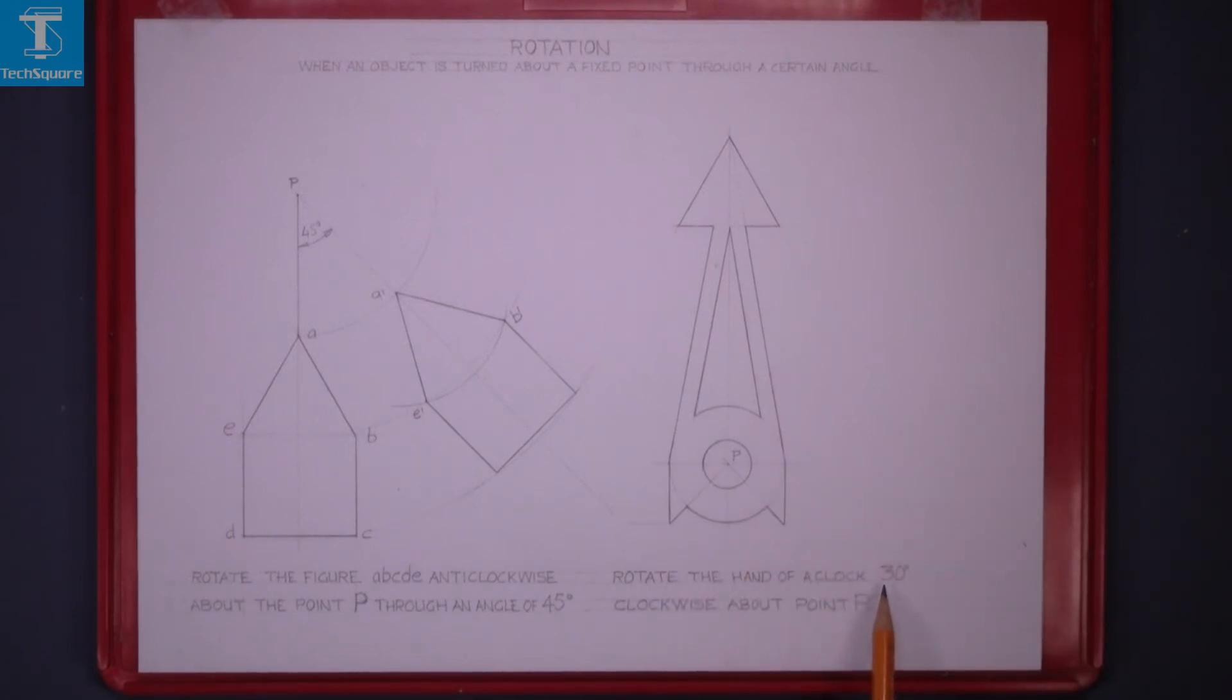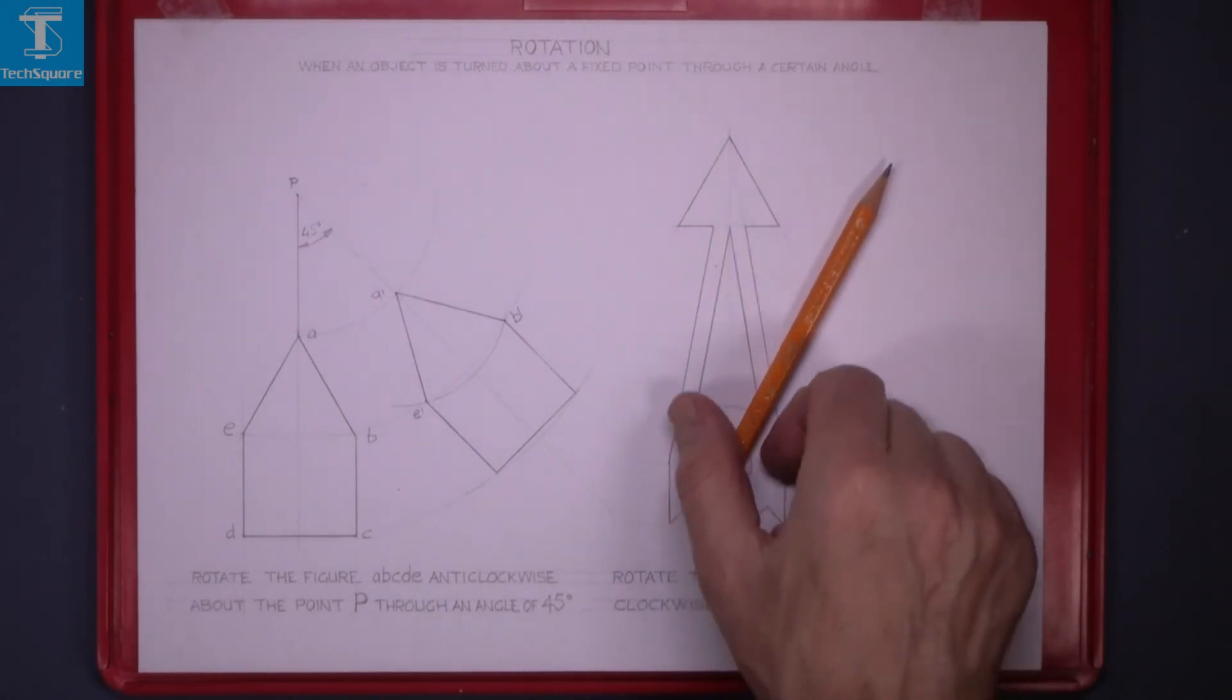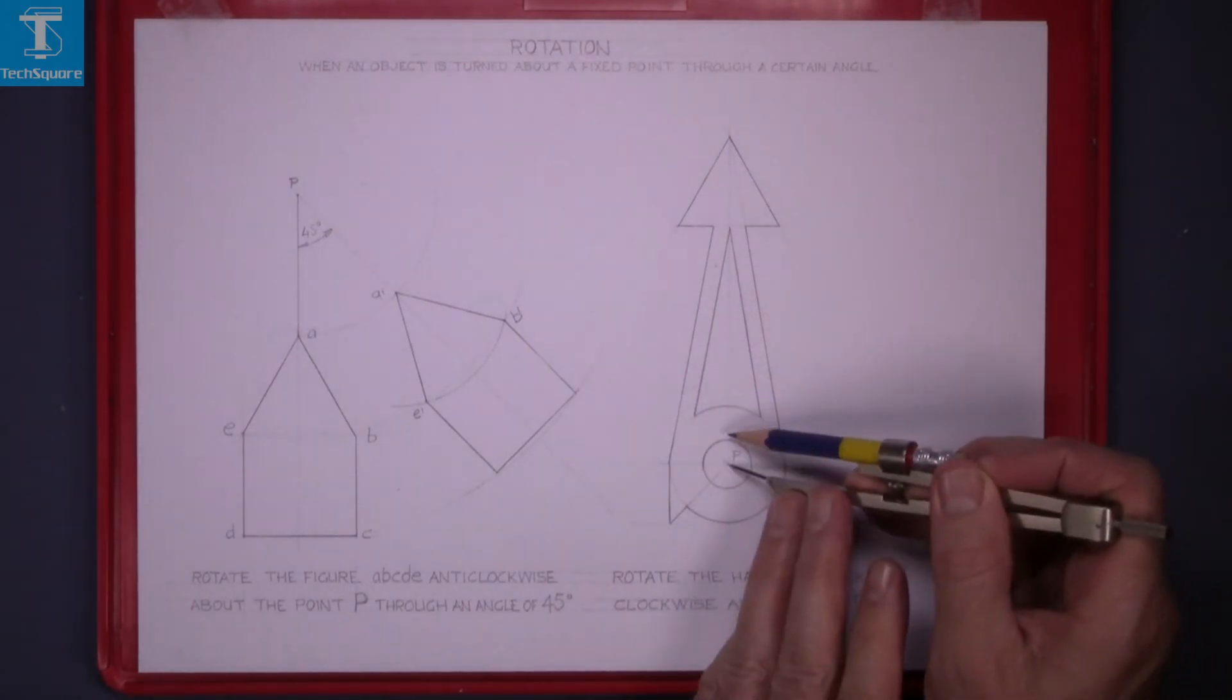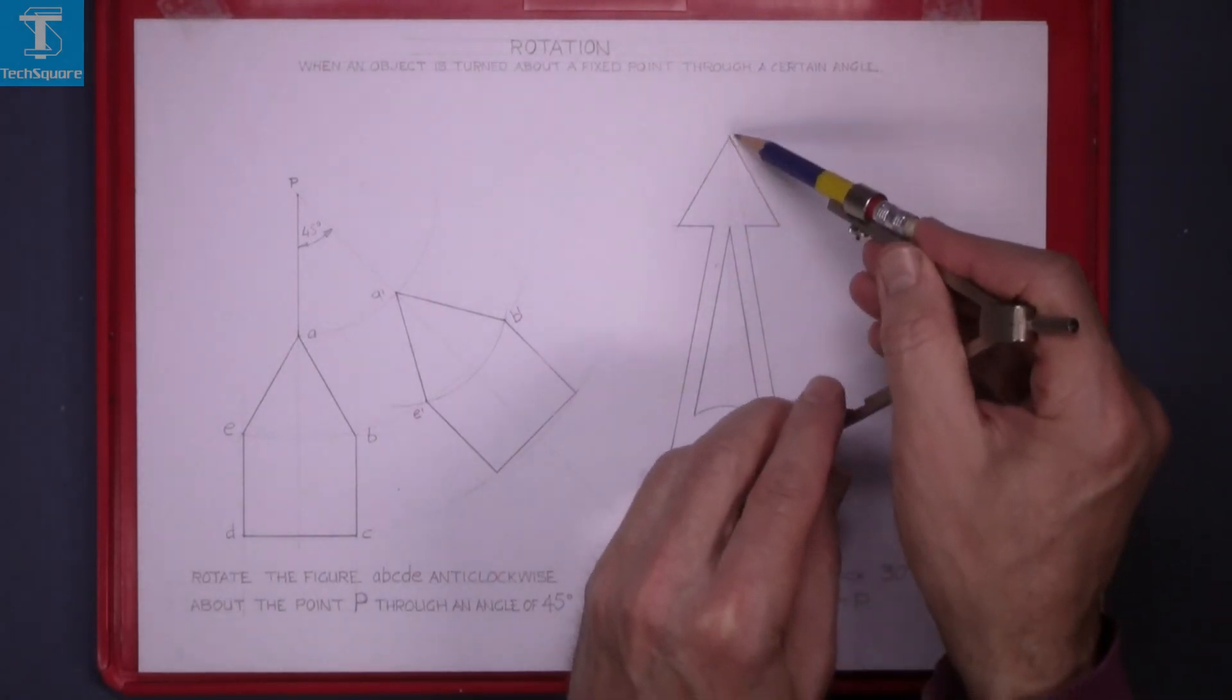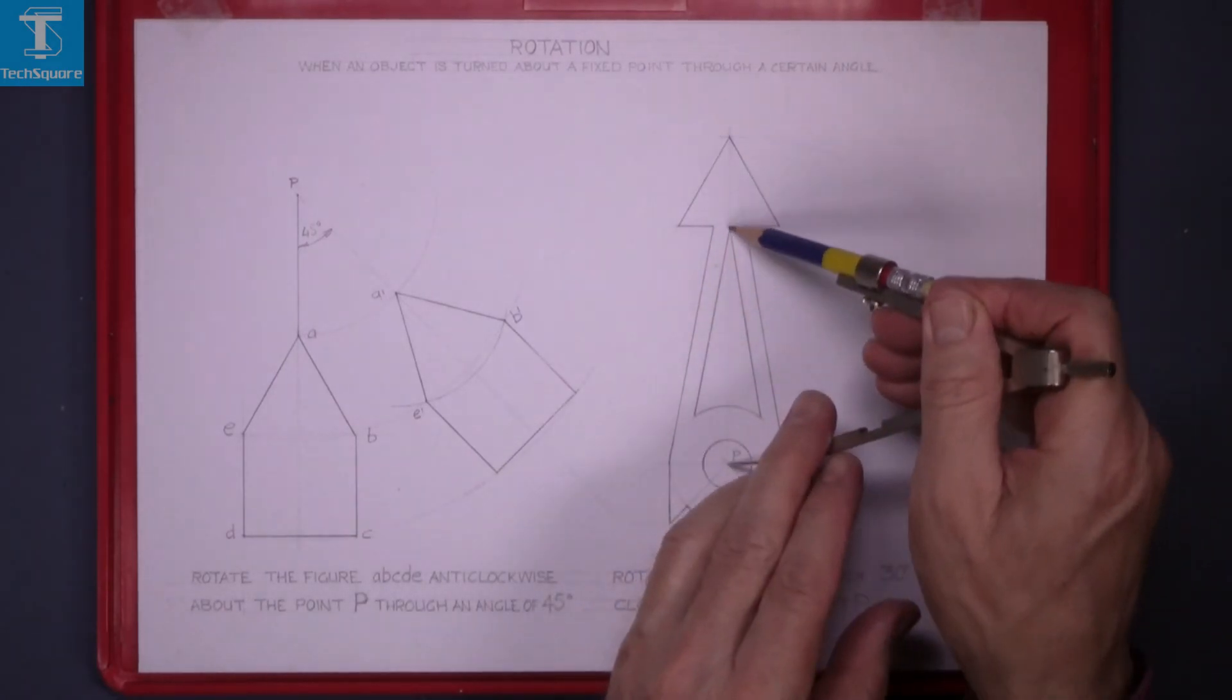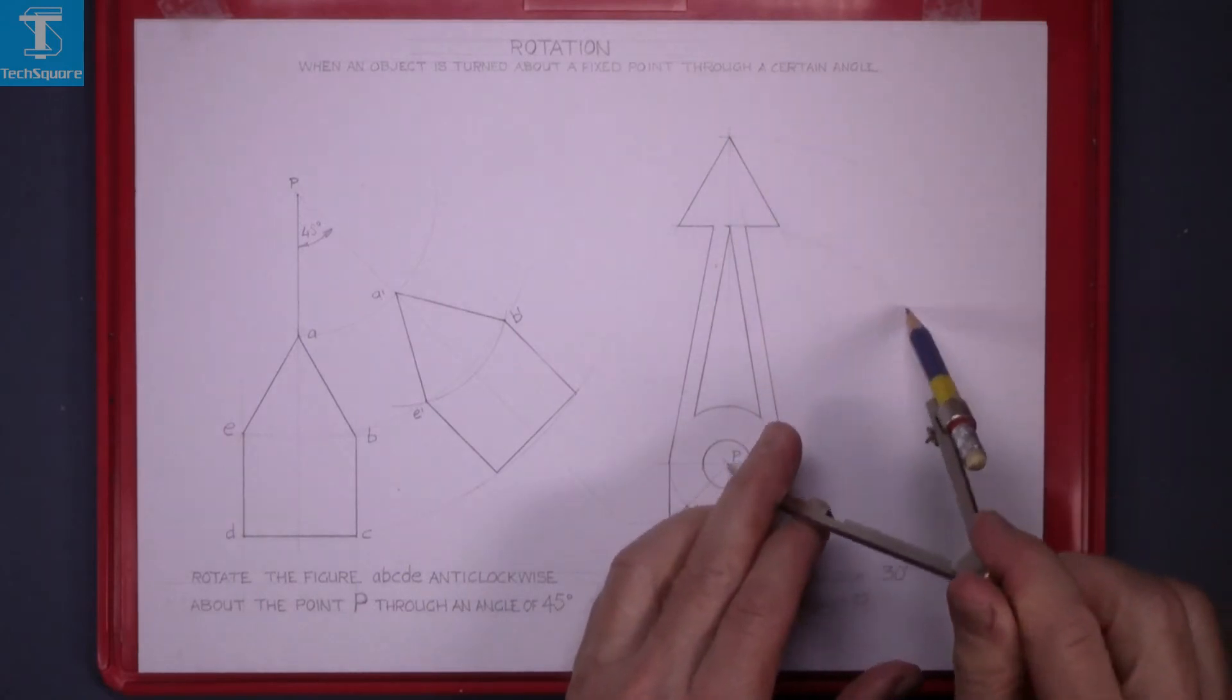Rotate the hand of a clock 30 degrees clockwise about point P. So I have point P in the centre, so the hand is going to rotate 30 degrees this direction. Put the point of the compass in the centre P, set it to the top point and rotate it clockwise. And the same for this point here on the centre line and rotate it.